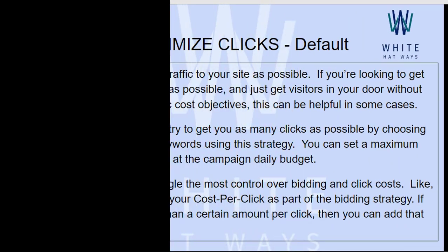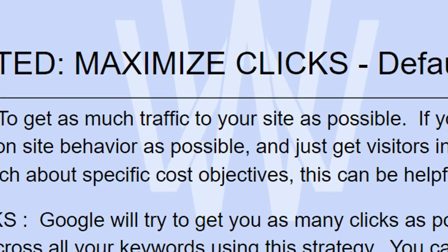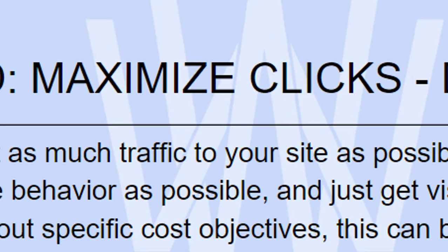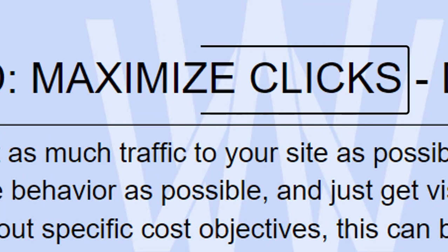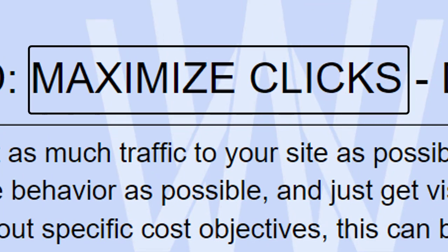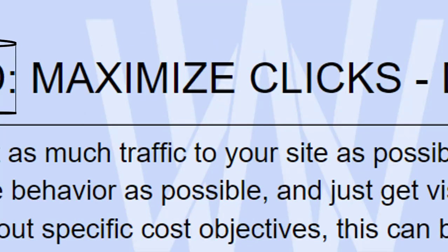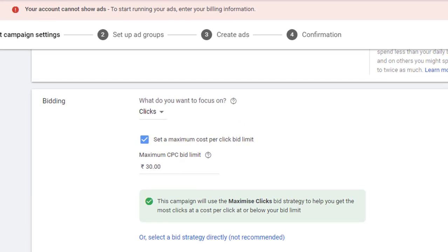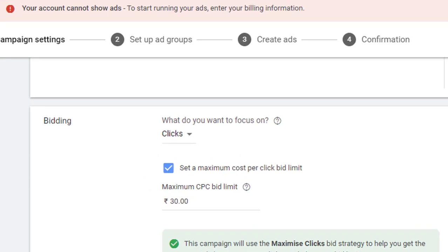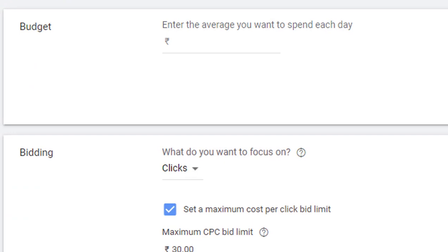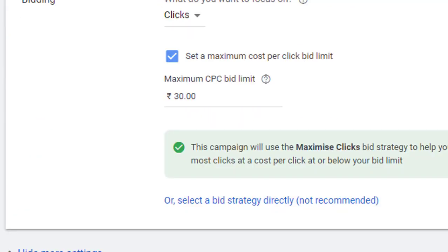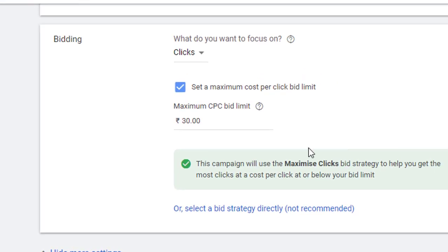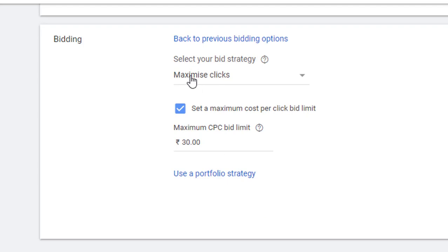Welcome to Wideheadways. In this video we'll be learning about what is maximize clicks. Maximize clicks is a bidding strategy. When we are making our campaign, under the budget there is this option of bidding under which you will get maximize clicks as the option.